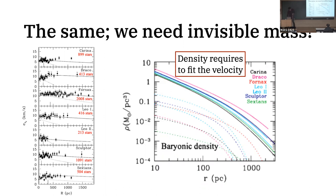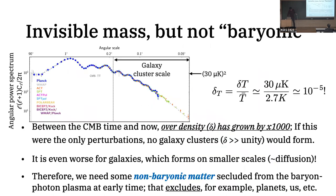Friday's journal club is about how the Schrödinger equation solutions cannot explain stellar dynamics in dwarf galaxies — that's the conclusion of that paper. As promised, we also know that dark matter particles cannot be baryonic: that evidence comes from the CMB.